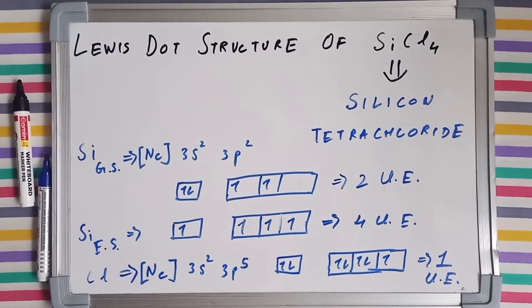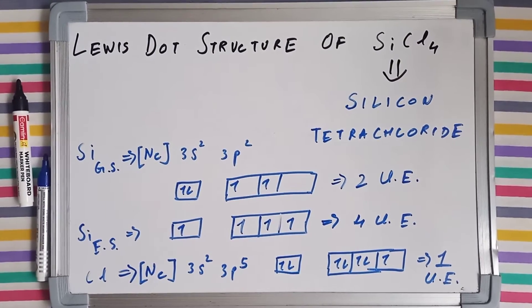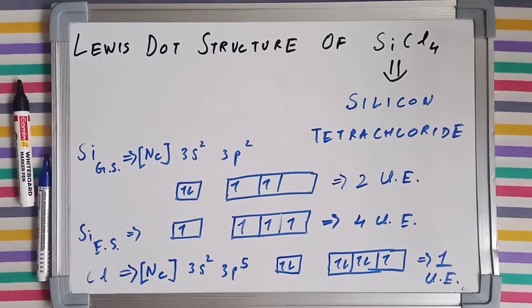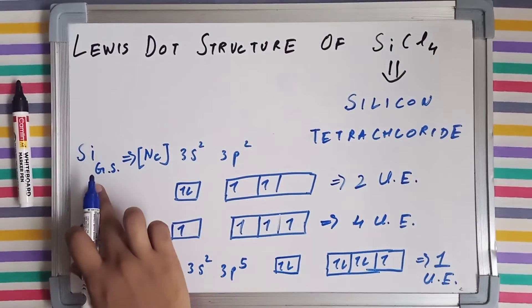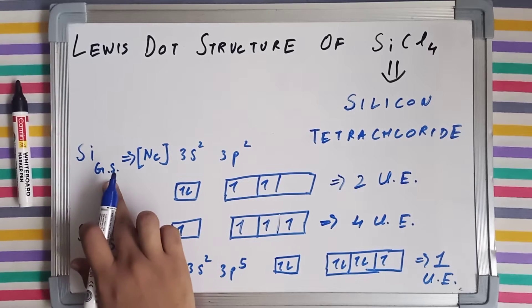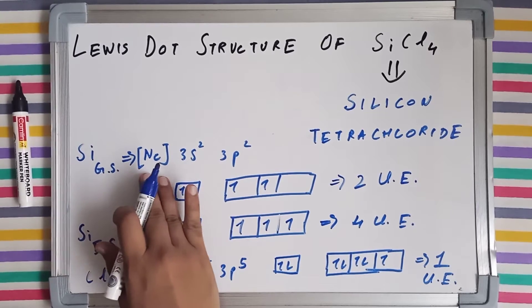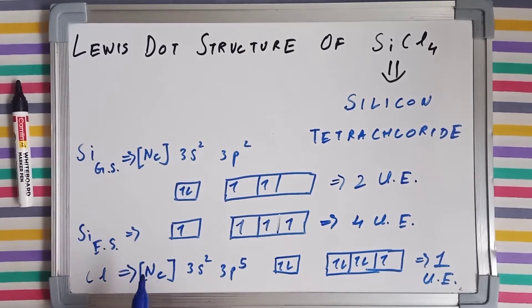Welcome everyone, welcome to Science Unfiltered. Today we'll be drawing the structure of SiCl4, which is known as silicon tetrachloride. The electronic configuration of silicon in ground state is the inert configuration of neon and then 3s² 3p².